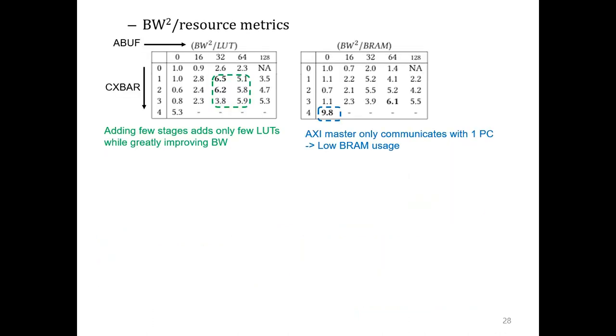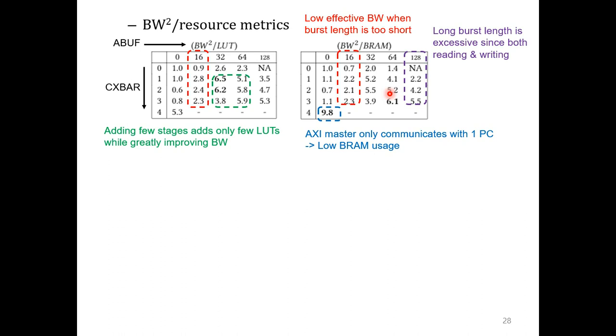Let's look at the bandwidth squared over resource metrics in both dimensions. The y-axis is the number of custom crossbar stages, and the x-axis is the burst buffer size. As we have seen in the previous slide, adding few custom crossbar stages greatly improved the effective bandwidth while consuming only a few LUTs. Also, completely replacing the built-in crossbar is a good choice in terms of BRAM because it only needs to write to a single output PC. We can also see that a small burst buffer is not competitive because the burst length is too short. Long burst length is not competitive either since we are both reading and writing, and will be limited to the half of the maximum bandwidth.